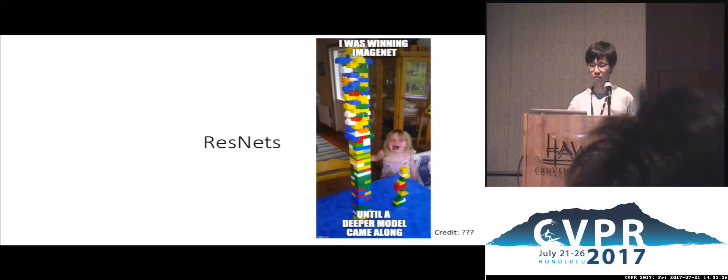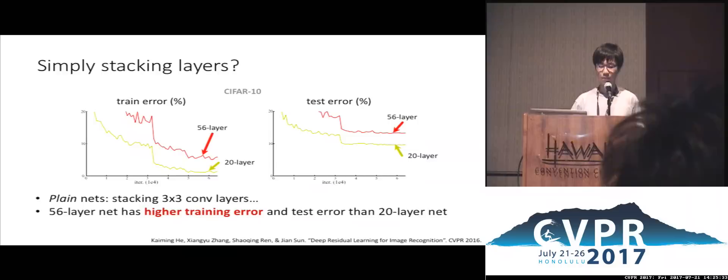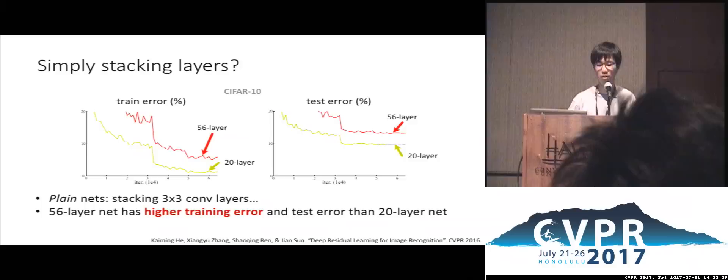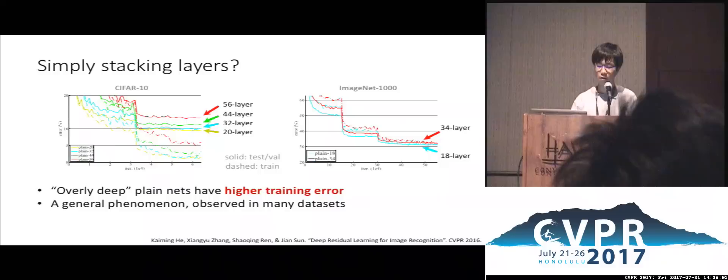Even worse, the training error of the deeper version is higher than the training error of the shallower version. This is a general phenomenon observed in almost all datasets and many types of plain network models. This is counterintuitive: a deeper model with 34 layers has a richer solution space than an 18-layer model and should not have higher training error. We can construct a solution where the deeper model copies weights from the shallower model and sets extra layers as identity mappings.